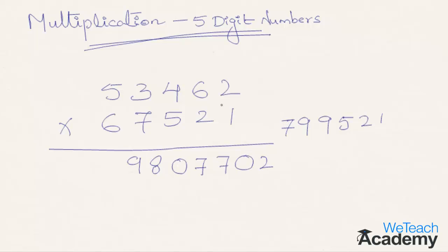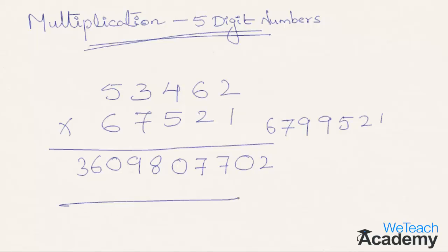Step eight, consider 2 digits from left: 5 into 7 is 35, plus 6 into 3 is 18; 35 plus 18 is 53, plus 7 carried forward gives 60. Write 0, carry 6. Final step: 5 into 6 is 30, plus 6 carried forward gives 36. Write 36 in the final answer. The answer for 53462 multiplied by 67521 is 3,609,807,702.